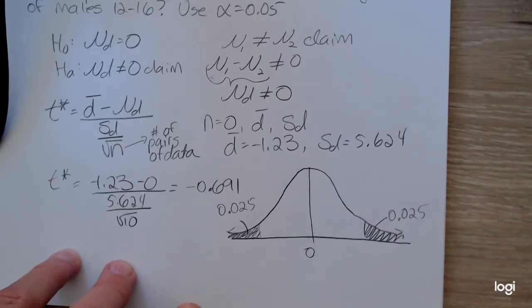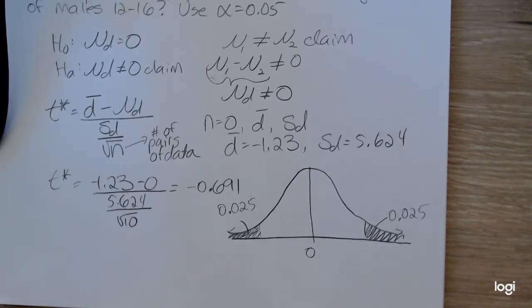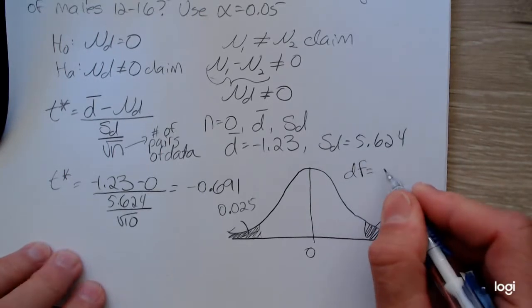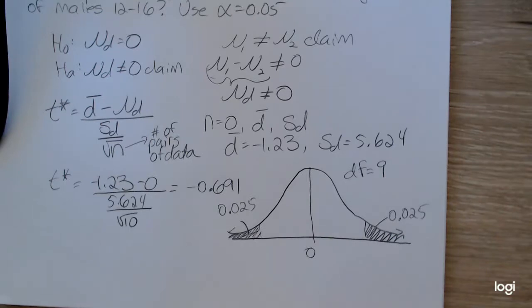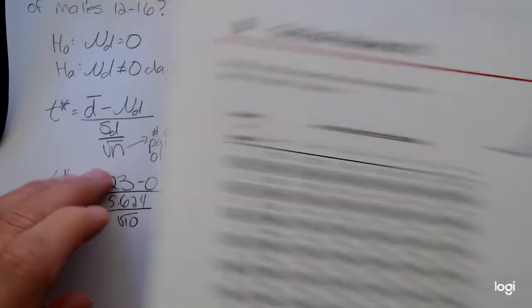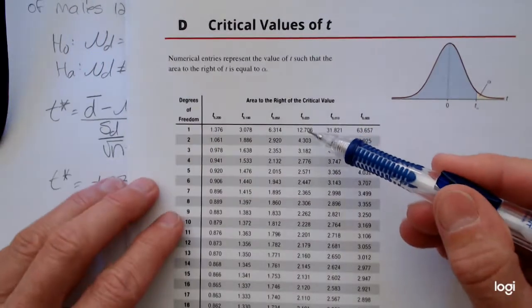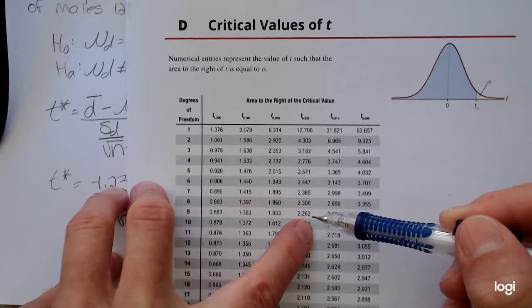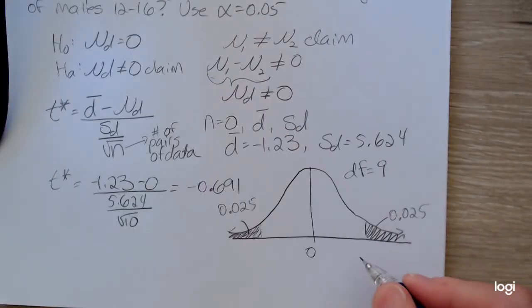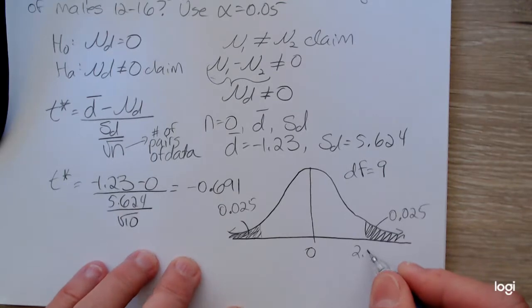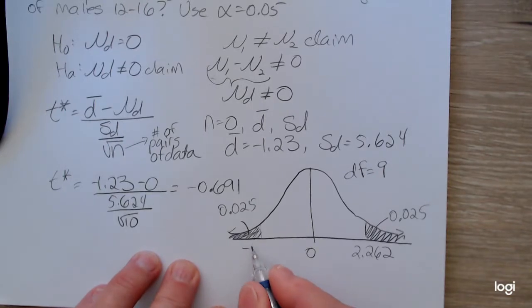The degrees of freedom for the paired t-test is n minus 1, which is the number of pairs of data minus 1. So the degrees of freedom for this example will be 9. Going to my t-table with 0.025 in that right tail and 9 degrees of freedom, the upper critical value is positive 2.262. That makes the lower one negative 2.262 by symmetry.